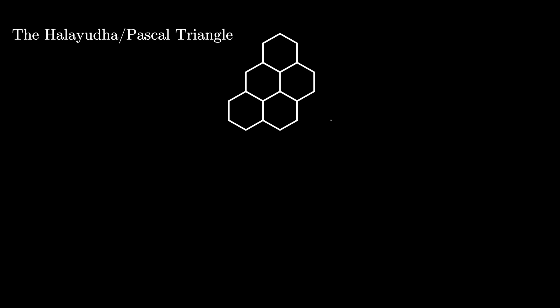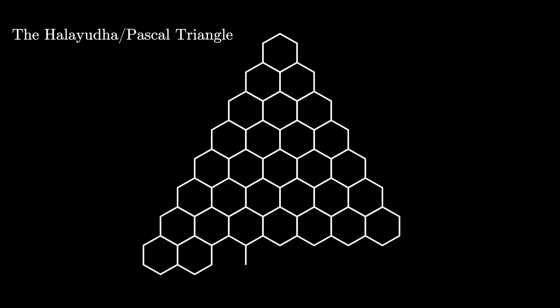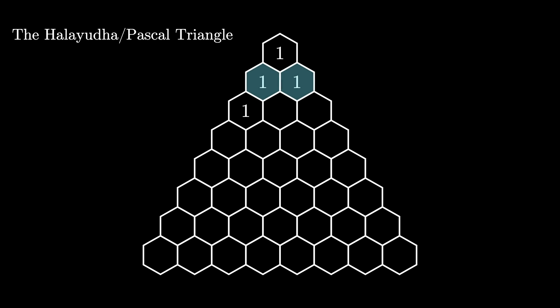The next construction requires us to use the Pascal triangle. Let's build this number triangle, but we'll only investigate the first few rows to begin with. In this number triangle, the 0th row or the top contains a 1, and the first row contains two 1s. Now each entry in the triangle can be obtained as the sum of the two entries directly above it.